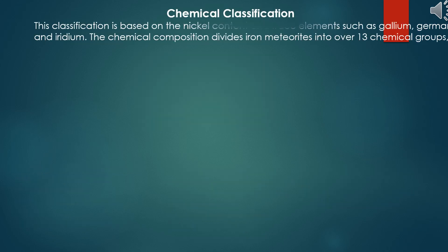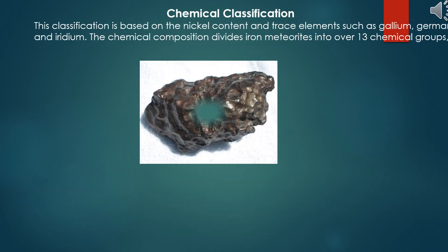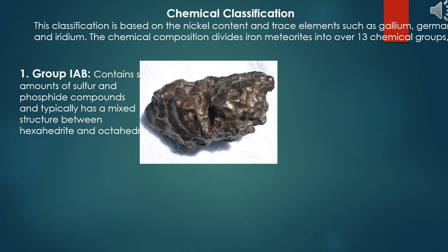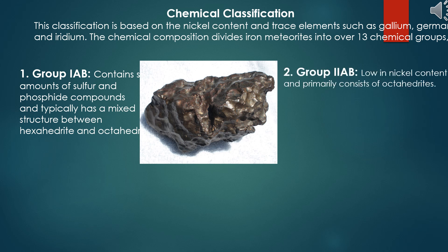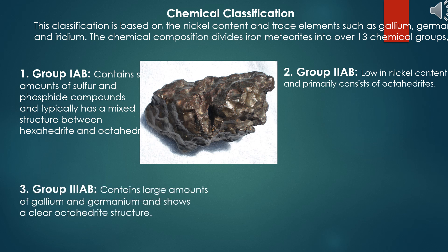Chemical classification: this classification is based on the nickel content and trace elements such as gallium, germanium and iridium. The chemical composition divides iron meteorites into over 13 chemical groups, including Group IAB: contains small amounts of sulfur and phosphide compounds and typically has a mixed structure between hexahedrite and octahedrite. Group IIAB: low in nickel content and primarily consists of octahedrites. Group IIIAB: contains large amounts of gallium and germanium and shows a clear octahedrite structure.